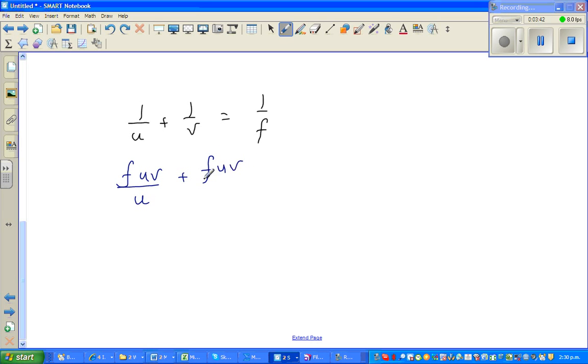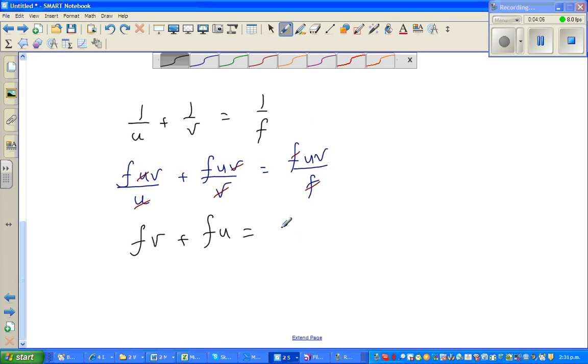Let me cancel: the u cancels here, the v cancels here, and the f cancels there. So fv + fu = uv, and I want to make u the subject.